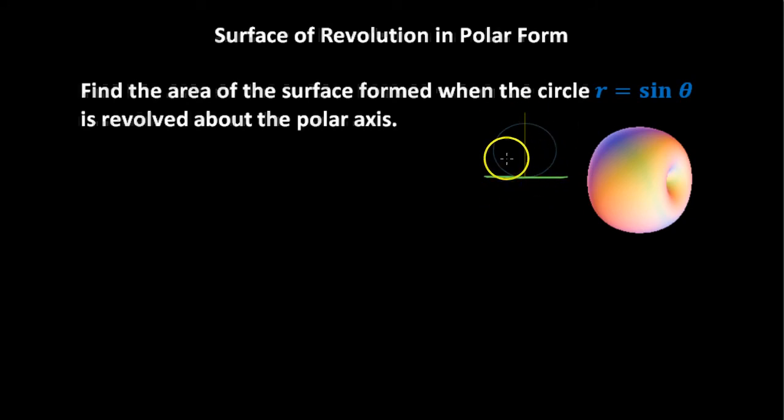So we have this graph here, and it's revolved about the polar axis. It's kind of coming out of the screen there at you. It makes this donut when it's revolved around. We call the donut a torus. Now we want to find just the surface area, not the volume, but just the area around that.